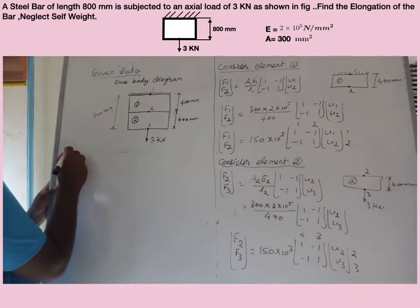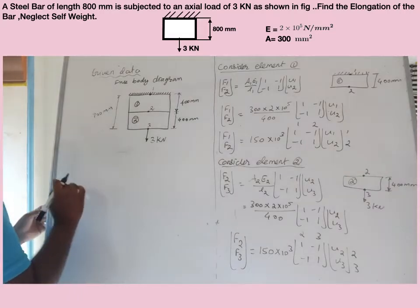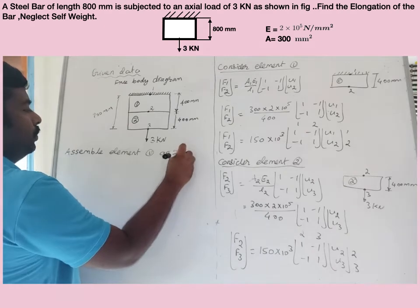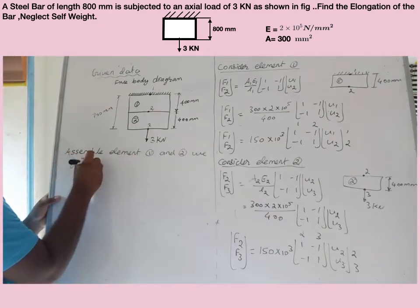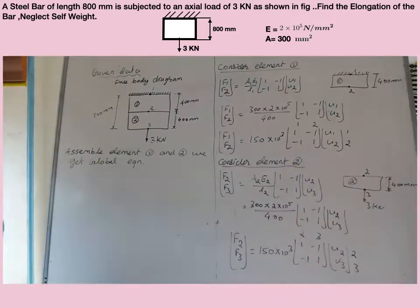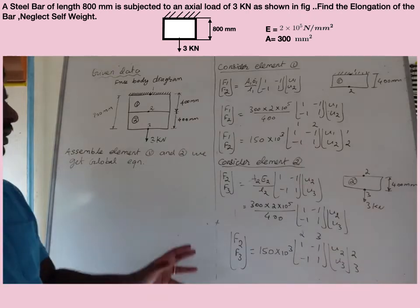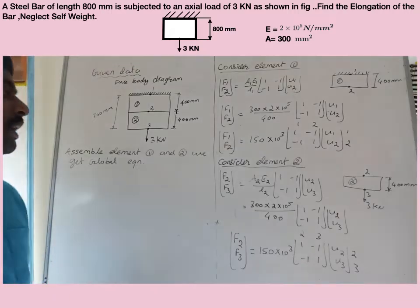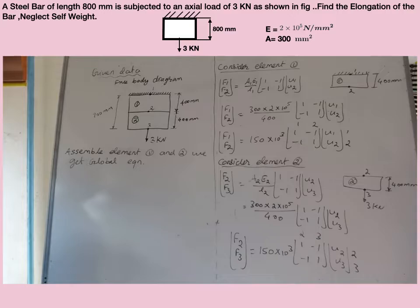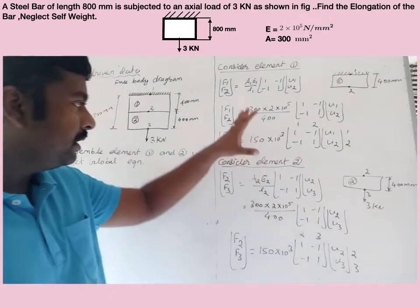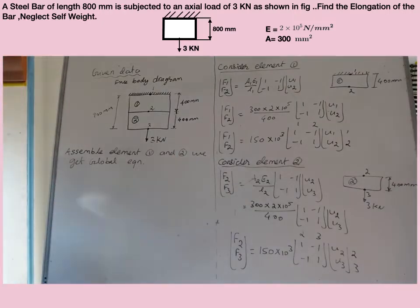The next step is to assemble elements 1 and 2 to get the global finite element equation. Before assembling, make sure the coefficient of the two stiffness matrices should be the same. Here, the coefficient of both matrices is 150 into 10 cube, so they are equal and we can assemble element 1 and 2 directly. If the values were different, we would not be able to assemble them directly.